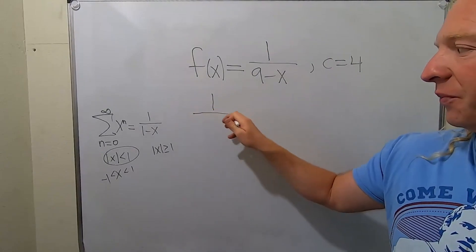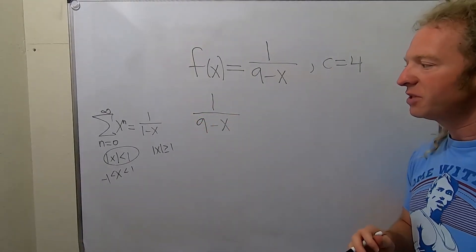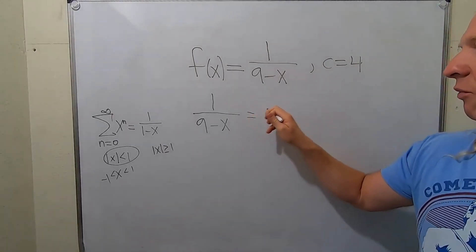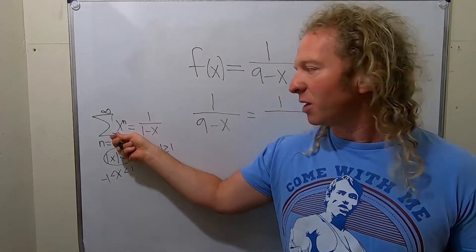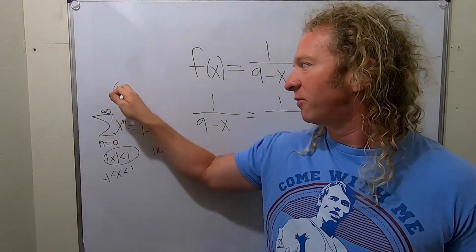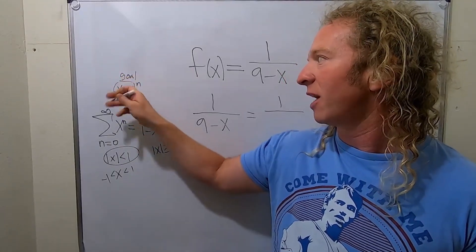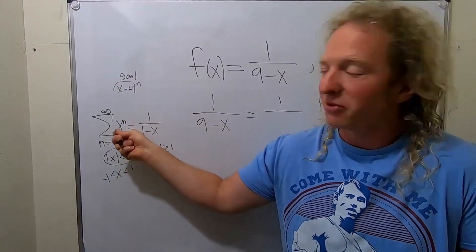So we have 1 over 9 minus x. And so the first thing we need to notice is that it's centered at 4. So we have 1 over, so notice this is centered at 0. So we want this to look like x minus 4 to the n. That's our goal. That would mean we have a center at 4, c equals 4. This is really x minus 0, so here the center is 0.